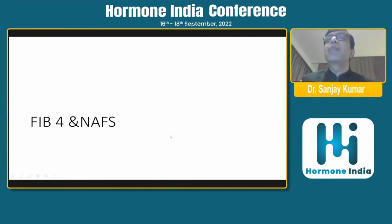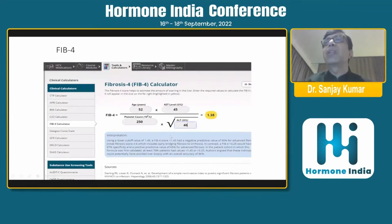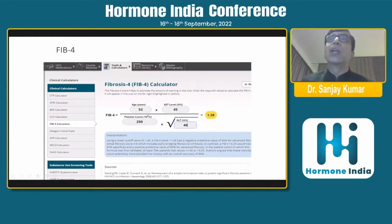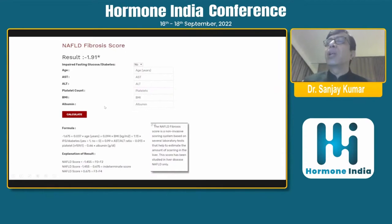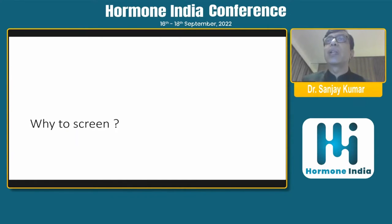The FIB-4 and NAFLD fibrosis scores are simplified scoring systems available online. For FIB-4, you enter four values — age, AST, ALT, and platelet count — and get a score. A value less than 1.45 has a negative predictive value of more than 90% for advanced fibrosis. The NAFLD fibrosis score additionally requires BMI and albumin. It is very popular in the UK, and FIB-4 is becoming popular globally.